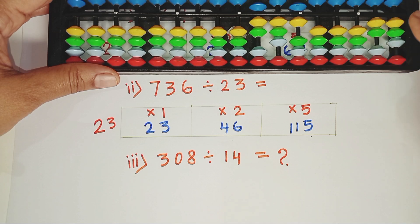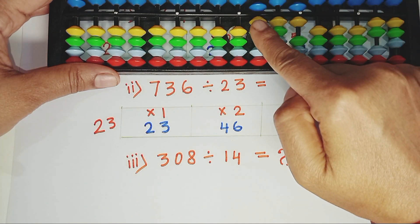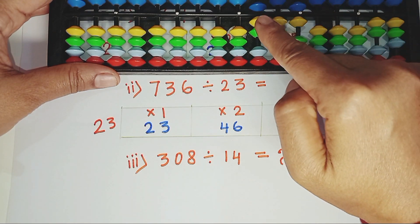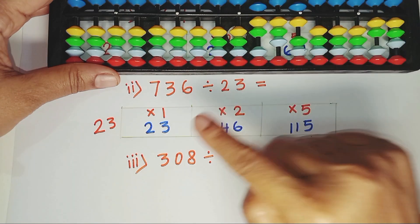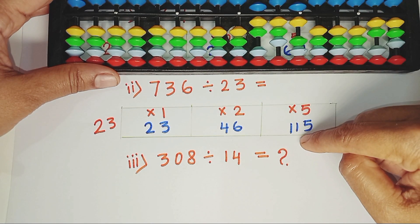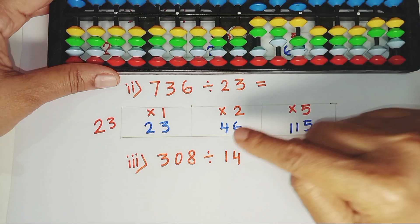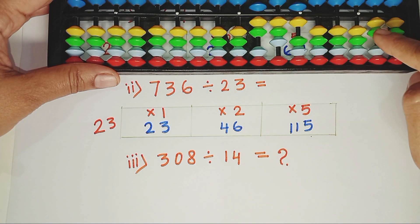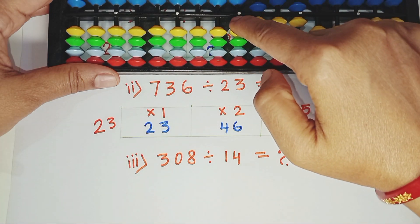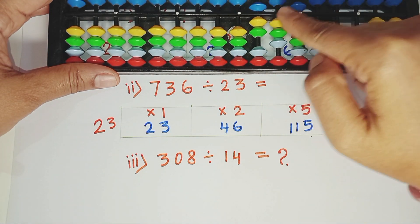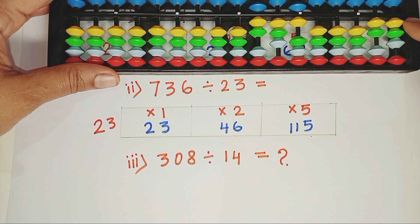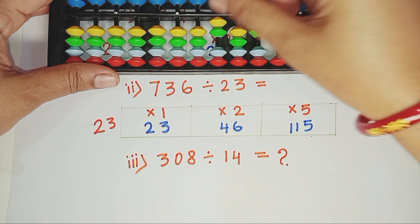736 divided by 23. As the divisor has 2 digits, we need to consider 2 rods. That represents 7 and 3, which is 73. 73 falls between 23 and 115. So we will consider 46. 23 times 2, 46. We need to jump one rod and place the answer here as we consider 2 rods and the divisor has 2 digits. 23 times 2, 46.